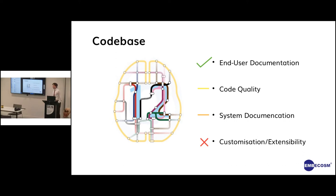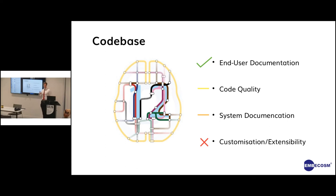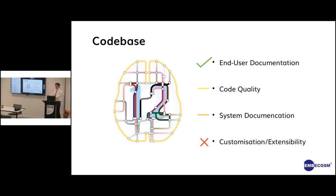The next takeaway was about the code base. The SPM code base we were porting from is academic software written by academics for other academics, and in that it does its job really well — the end-user documentation is quite good. What we struggled with more was a mix of code quality and system documentation. If you want to rip the guts of SPM out and do stuff with it, the documentation for that is very mixed: some bits are really well documented and some bits are less well documented. The same goes for code quality.